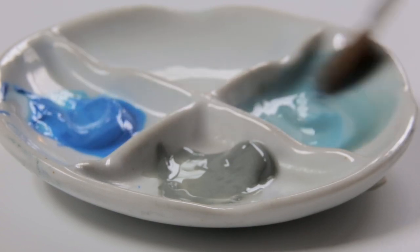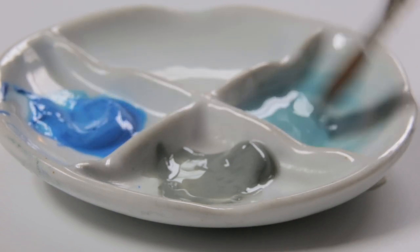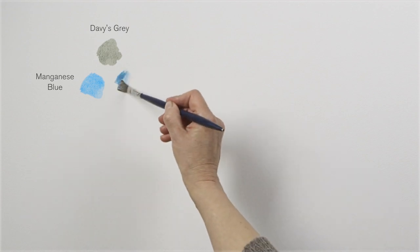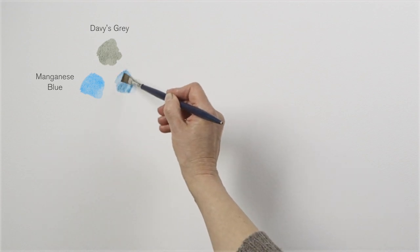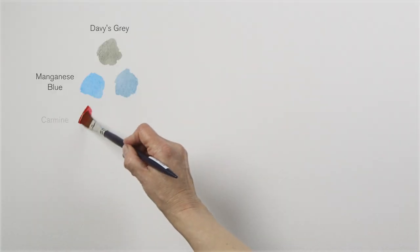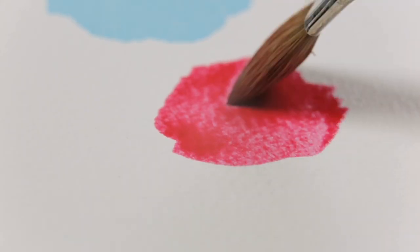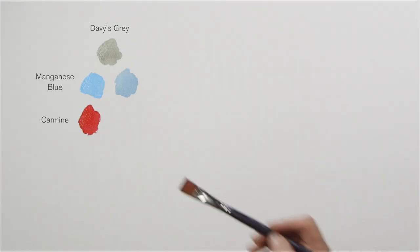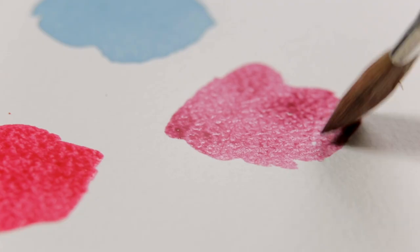Now look what happens to the manganese blue when I add Davy's Grey to it. Now look at the way it alters the carmine.